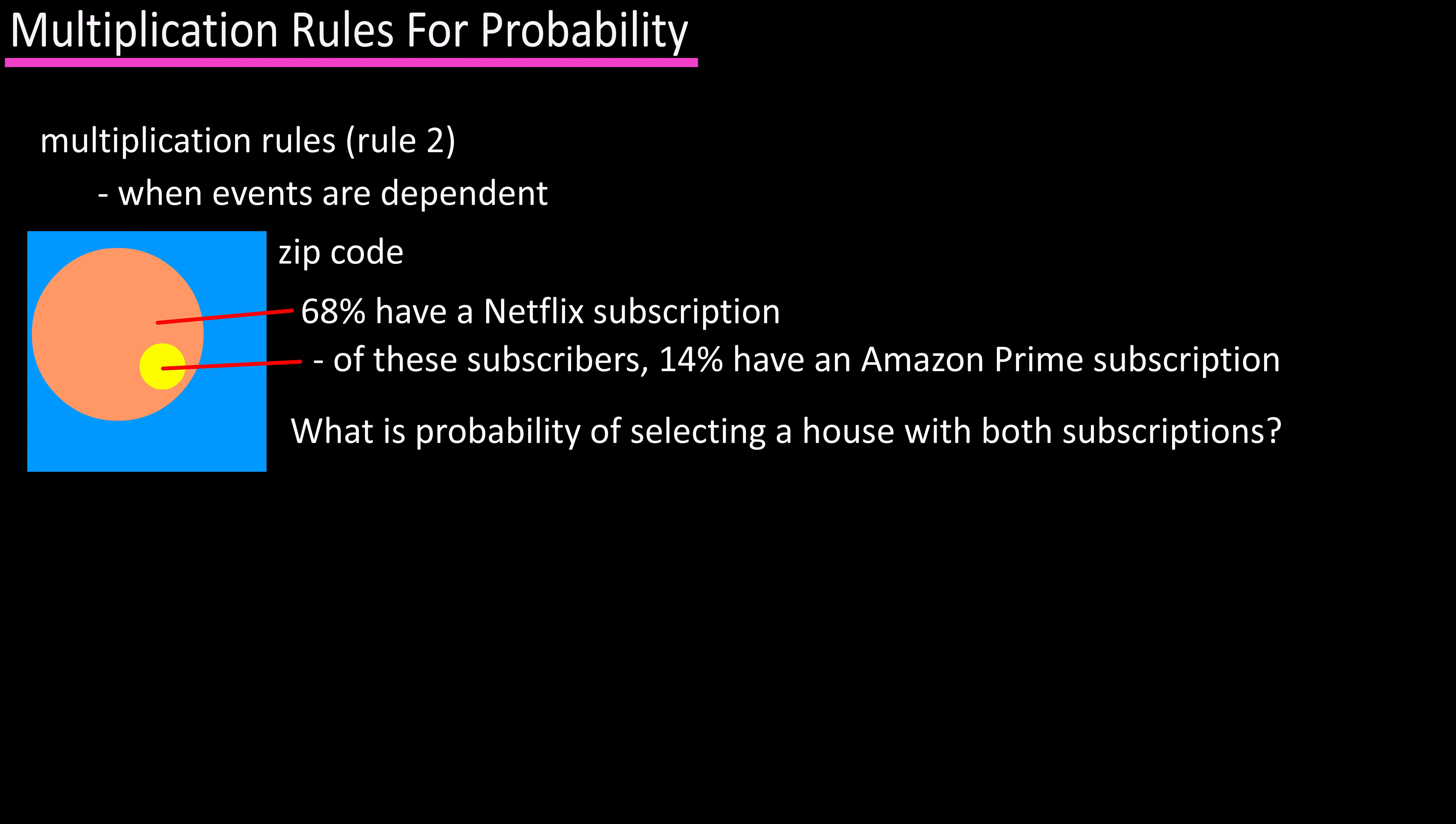We're going to use the formula for multiplication rule number two here. The probability of A and B equals the probability of A times the probability of B given that A has already occurred. In this situation, we'll assign event A as a home with a Netflix subscription, and event B as a home with an Amazon Prime subscription. We know that probability of A is 0.68, or 68%, as we were given that data, and we were actually given the second part of the equation as well.